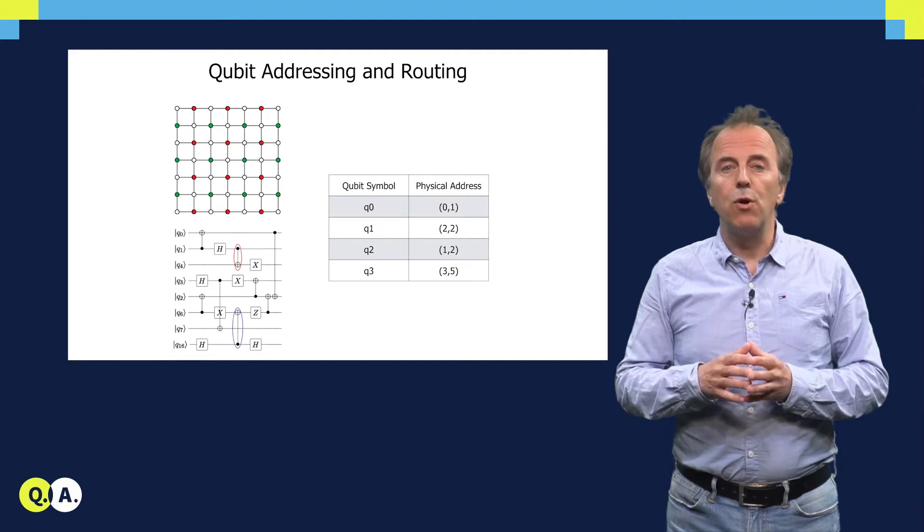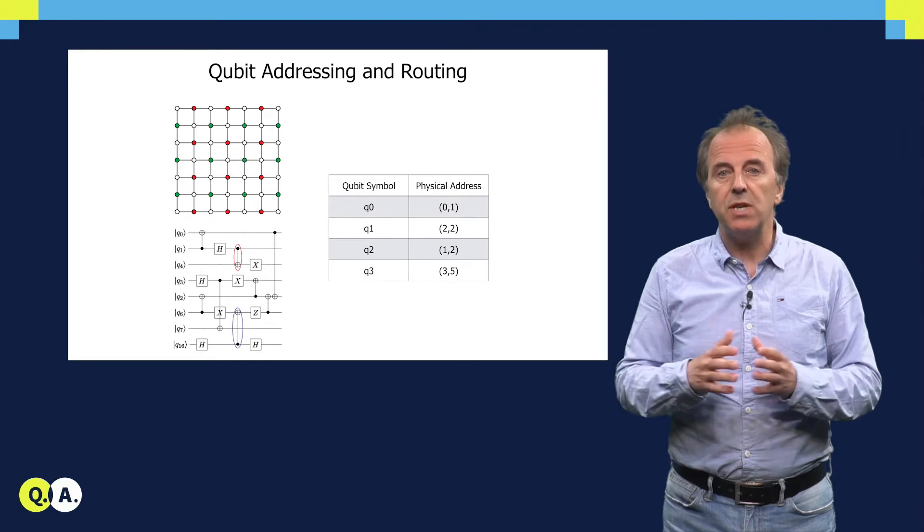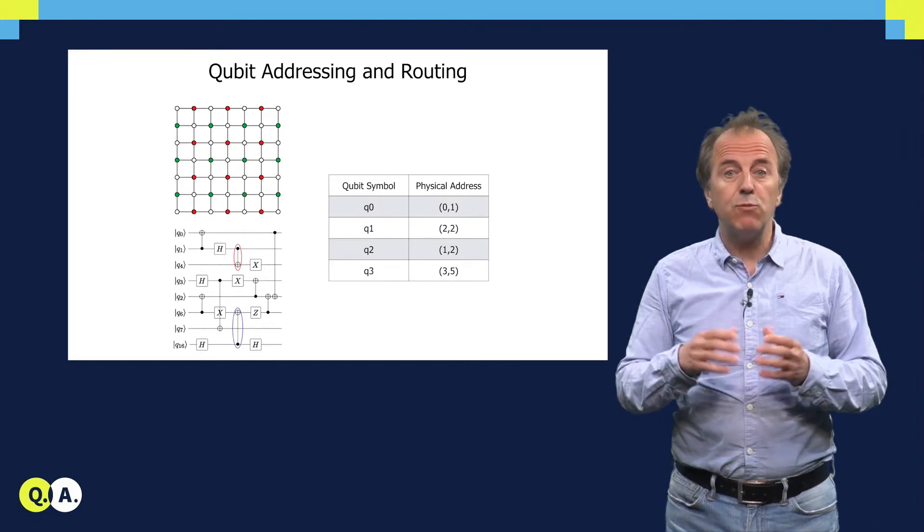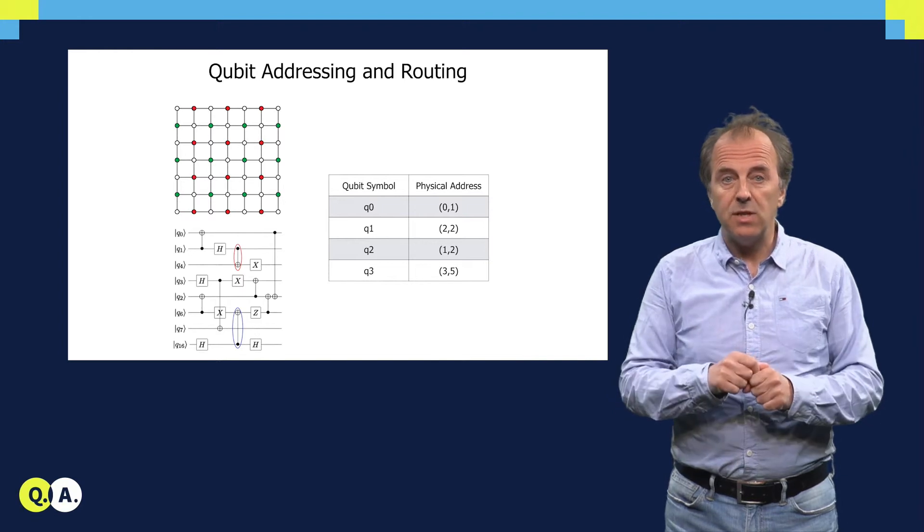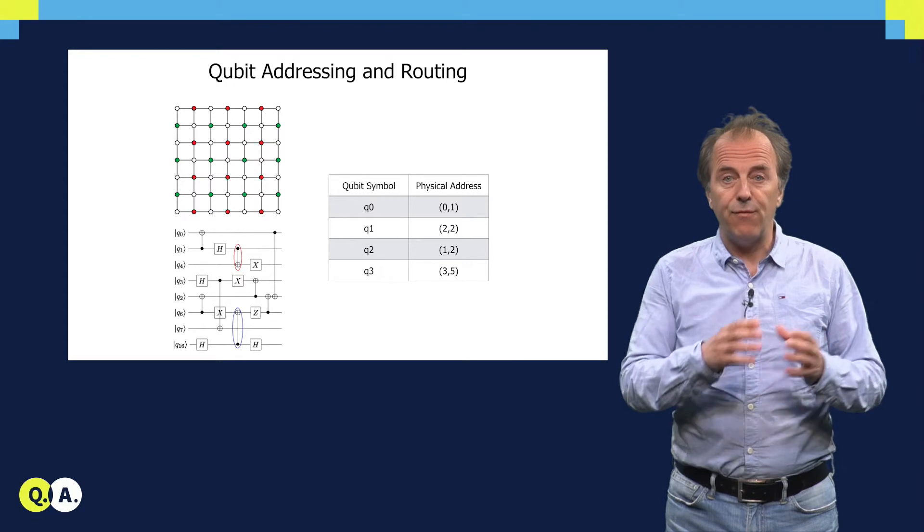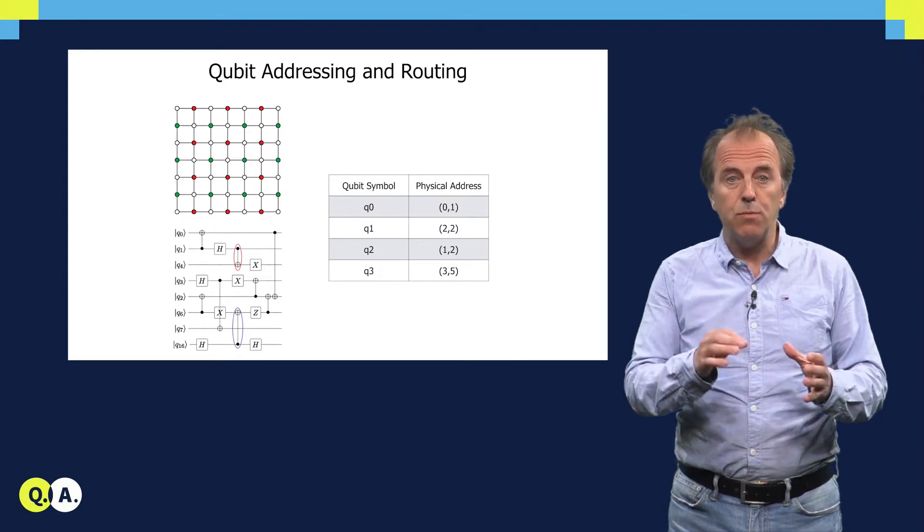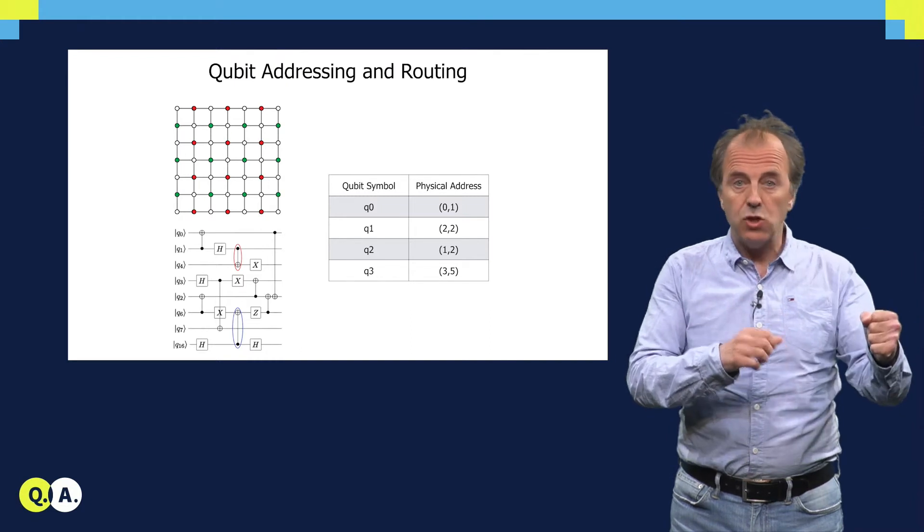Another important component of the microarchitecture is the qubit addressing table, which allows us to keep track of qubits and their locations. The address and location of these qubits are basically used to update the physical address of each qubit used in our algorithm, whenever it is moved from one location to the other.